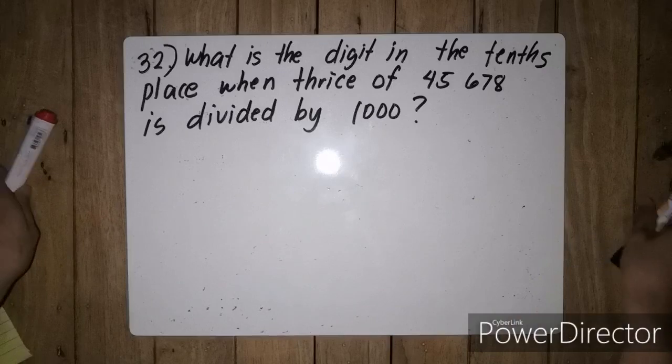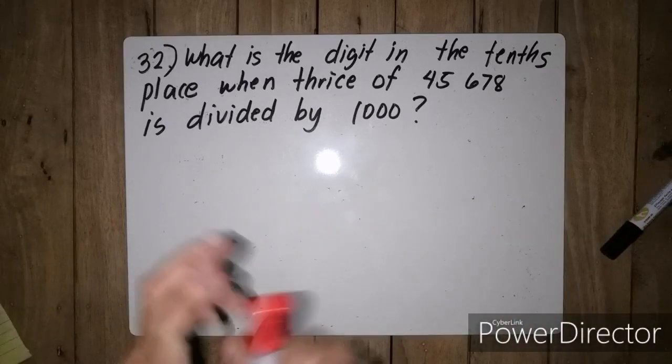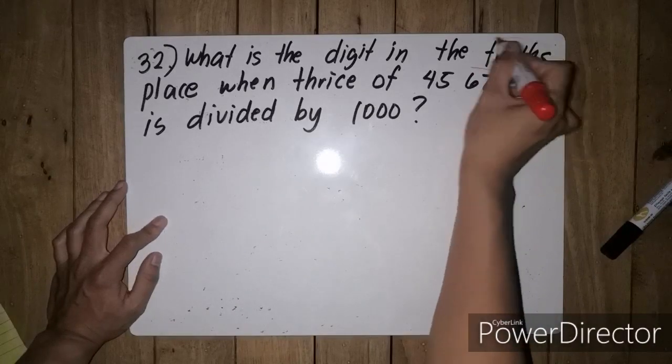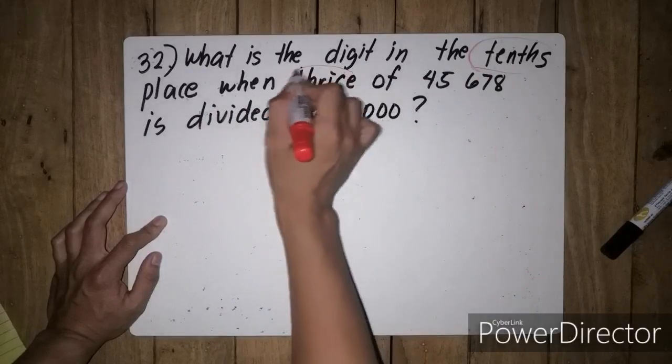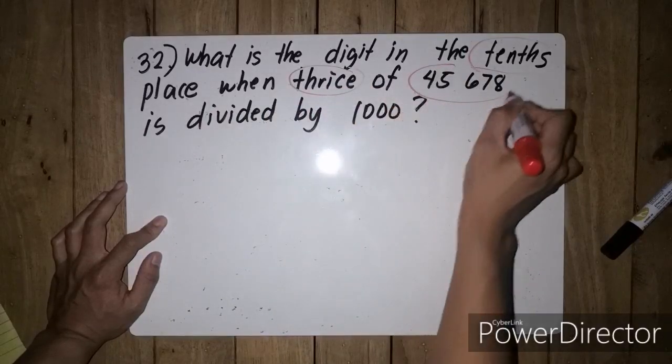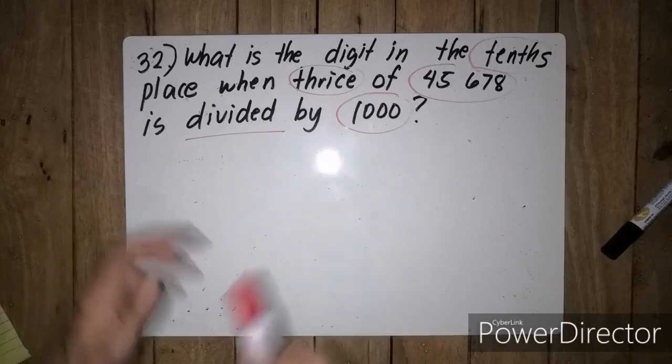Lahat ng words na kailangan yung tandaan, i-underline ninyo para hindi kayo malito. So we have tenths, we have thrice, 45,678, and 1000 divided by.